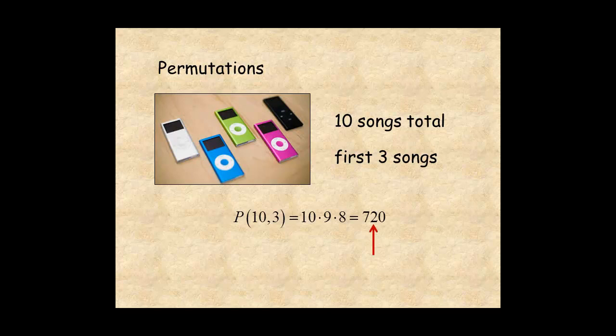Then, the probability that your first three songs play in that order is one chance in 720, or about one-tenth of one percent.